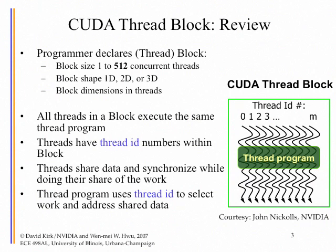All threads in a block execute the same thread program. Threads have thread ID numbers within the block — it could be a 1D, 2D, or 3D ID depending on what you decide. Threads share data and synchronize while sharing work, and the thread program uses the thread ID to select work and address memory, so threads can process different pieces of data.